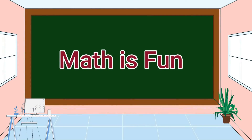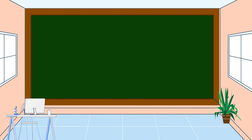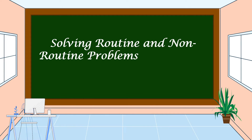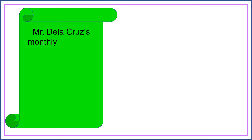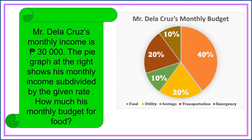Hello everyone, welcome to Math is Fun. Our lesson for today is all about solving routine and non-routine problems using data presented in a pie graph. Our first problem is a routine problem. Mr. de la Cruz's monthly income is thirty thousand pesos. The pie graph at the right shows his monthly income subdivided by the given rate. How much is his monthly budget for food?